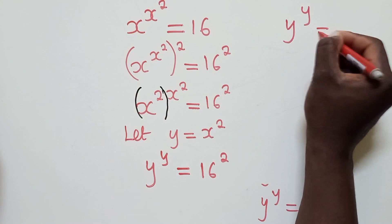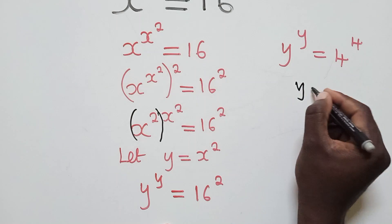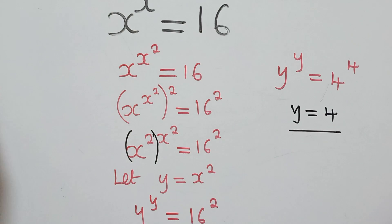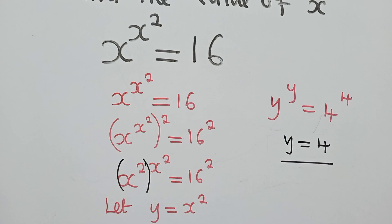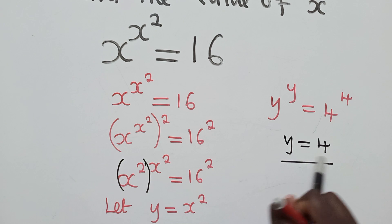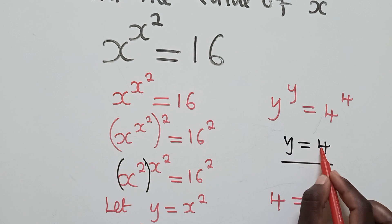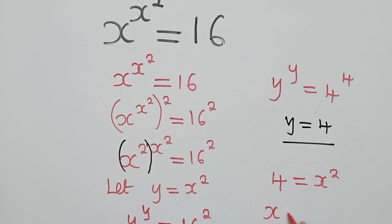So y^y = 4^4, therefore y = 4. But what have we been asked to find? It's x. So how do we get the value of x now that we have found y? We come back to where we said y = x². We substitute: 4 = x², because the value of y is 4. Since 4 = x², the value of x will be...